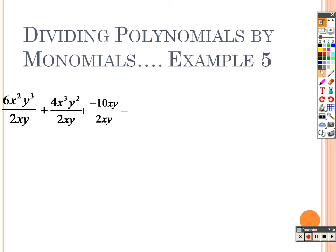Here's the whole problem, and what we're going to do is try to simplify each of these as much as we can. I'm going to expand everything, and the reason why I'm expanding it is just to show you, the very first time, how you can cross stuff out and make this simpler. It's a lot more work doing it this way, but you can kind of see how things cross out.